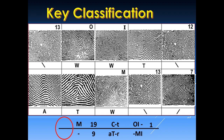This is our last example under key classification. We are lucky here because block 1 is already a loop pattern, so we simply copy the ridge count of that first loop pattern. We have 13, and we place it on the numerator or above the classification line. As you can observe in this example, this is now the complete Henry classification — from primary classification up to key classification.